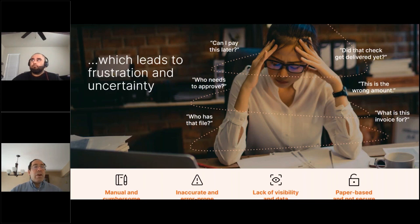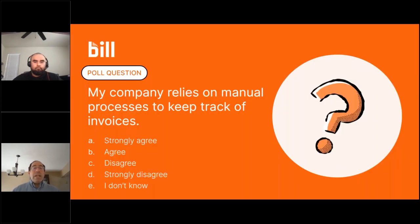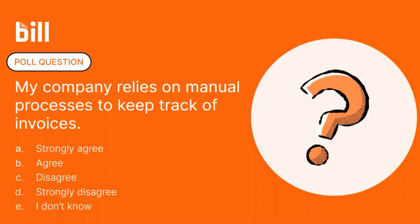These are a number of challenges that are typical of organizations that rely exclusively on paper, on individual spreadsheets, and on manual processes. Now, what we'd like to do is pose the first of our four polling questions. We will give attendees sufficient time to respond. We want to find out the extent to which you agree or disagree with the statement as it applies to your organization — whether or not your company relies on manual processes to keep track of invoices. This is the first of four polling questions.